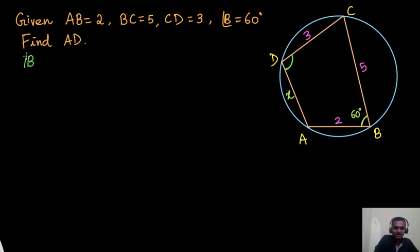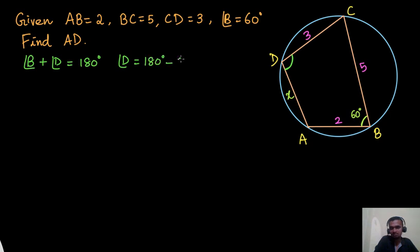We can easily find angle D from this. We know that angle B plus angle D is equal to 180, which means angle D is 180 minus angle B, which is 180 minus 60 degrees. So angle D will be 120 degrees.